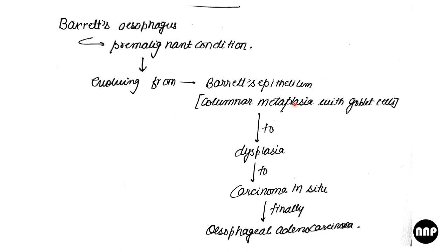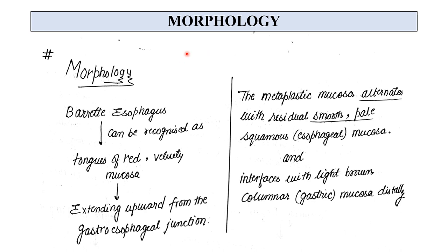Barrett's epithelium is a columnar metaplasia with goblet cells — the goblet cell is very important and we will see about it later. Barrett's Esophagus, being a premalignant condition, may finally lead to esophageal adenocarcinoma.